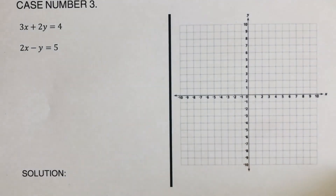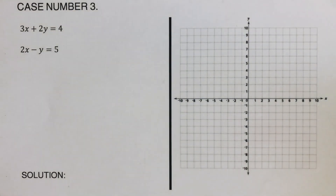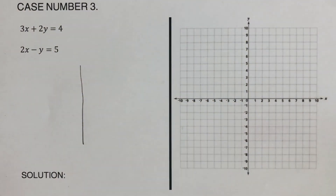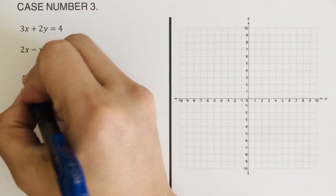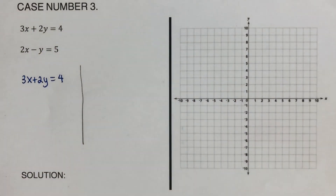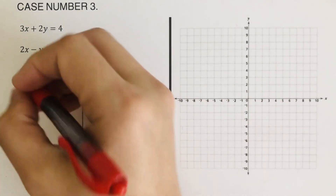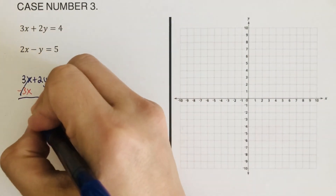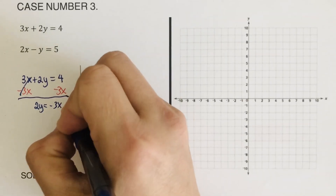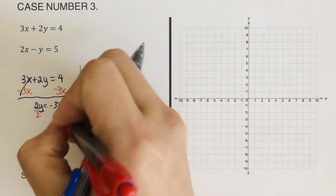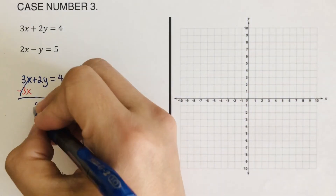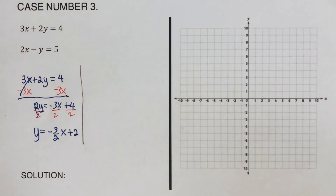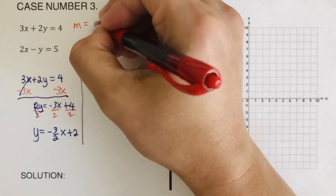Now let's move on to case three. Since the equations are not in slope-intercept form, we'll convert them. Taking the first one, 3x plus 2y equals 4: we subtract 3x from both sides to get 2y equals negative 3x plus 4, then divide both sides by 2, giving y equals negative three over two x plus two.